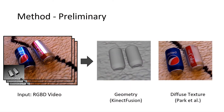Our method takes input as RGBD video from a consumer-grade sensor. We start by reconstructing a 3D model of the scene using Kinect Fusion and compute the diffuse texture using an existing method.